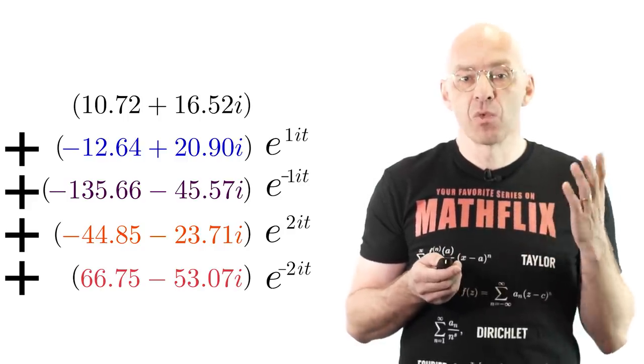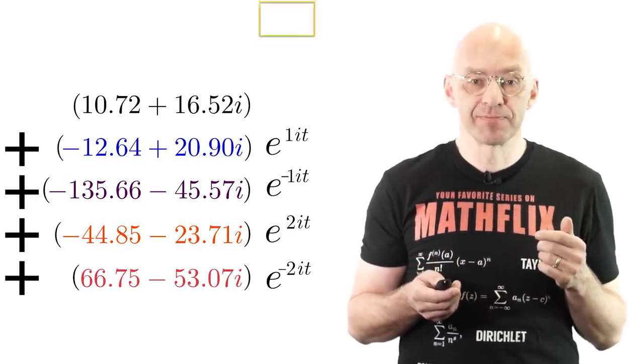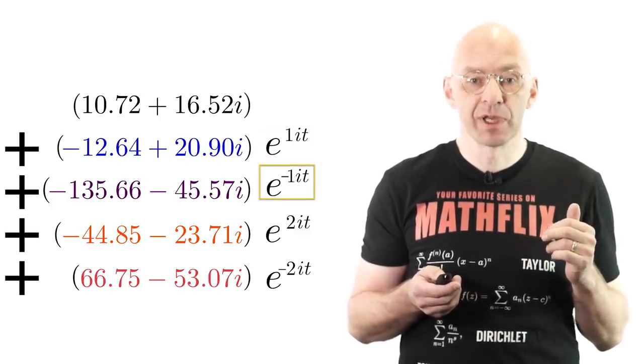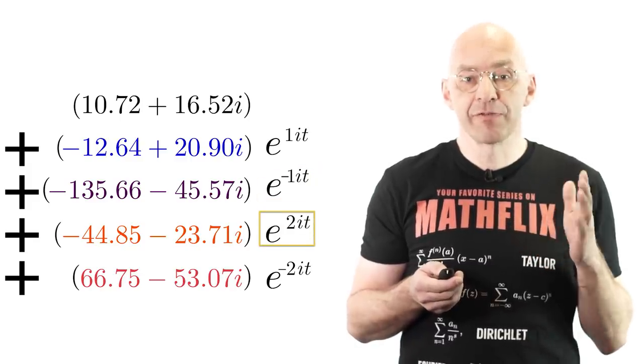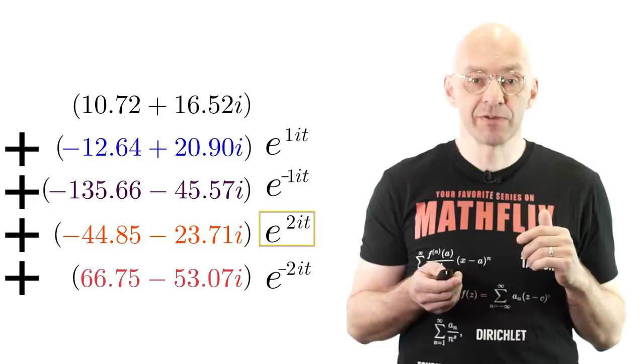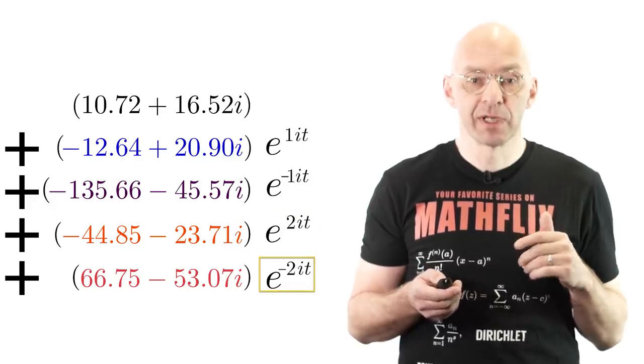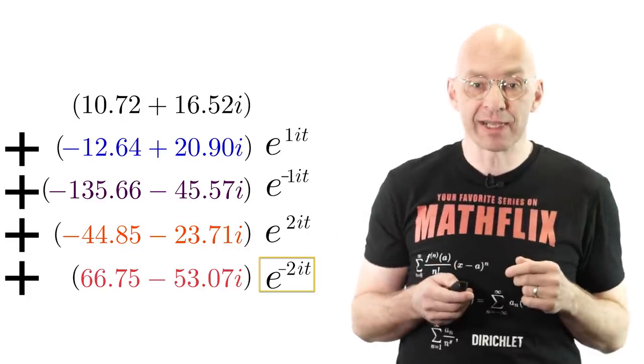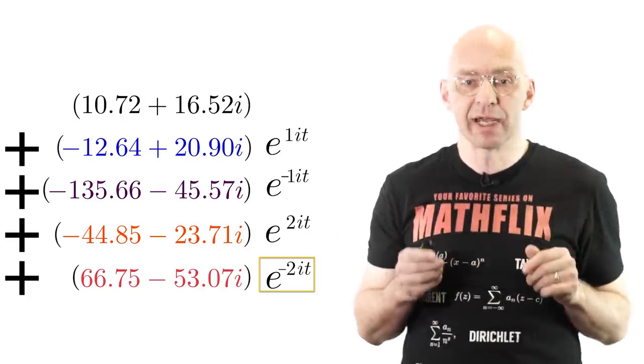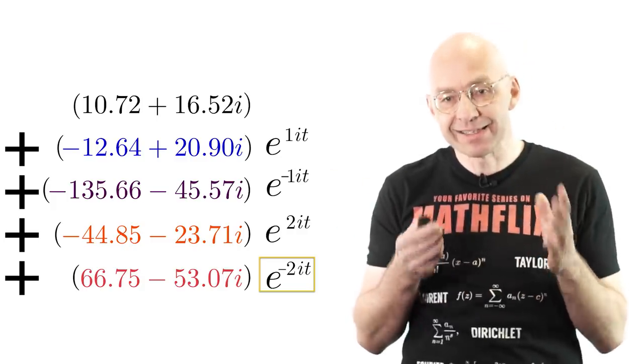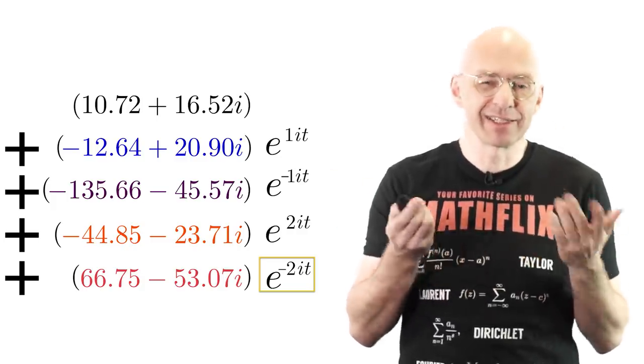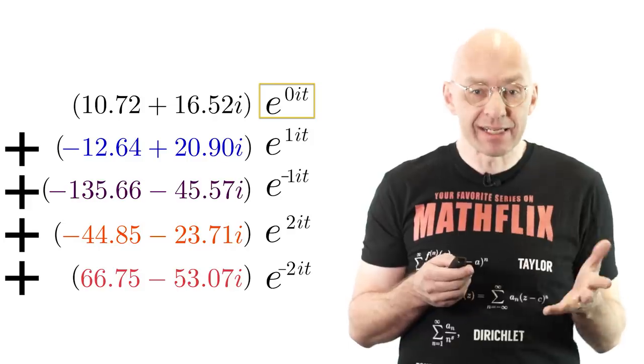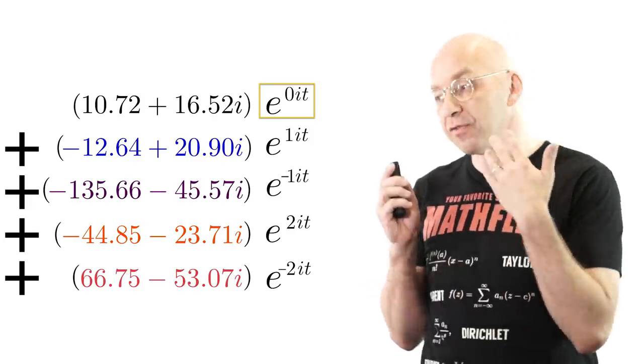Now let's have a closer look at the exponents of e in these terms. For the blue circle the exponent is 1 times it. Then -1 times it for the purple circle, 2 times it for the orange circle and finally -2 times it for the red circle. The pattern is obvious. Next in the infinite sum would be 3, -3, 4, -4 and so on. Every integer appearing exactly once except, well, there is no zero, right? Well actually zero is there just in disguise. Here it is. e^0 is 1. So the infinite sum that exactly captures the motion we are after is of this form here.